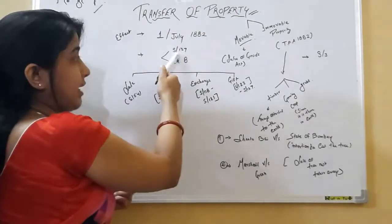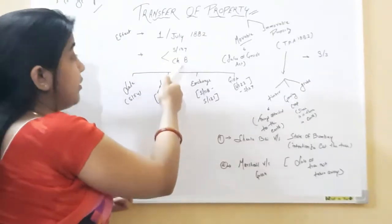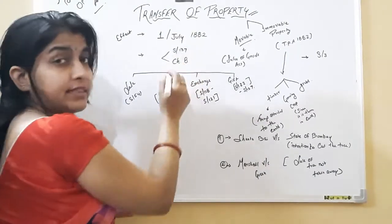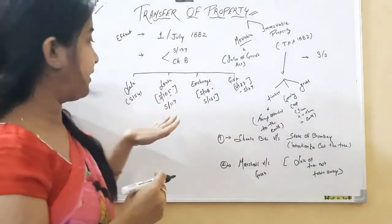This act is having total 137 sections with 8 chapters.